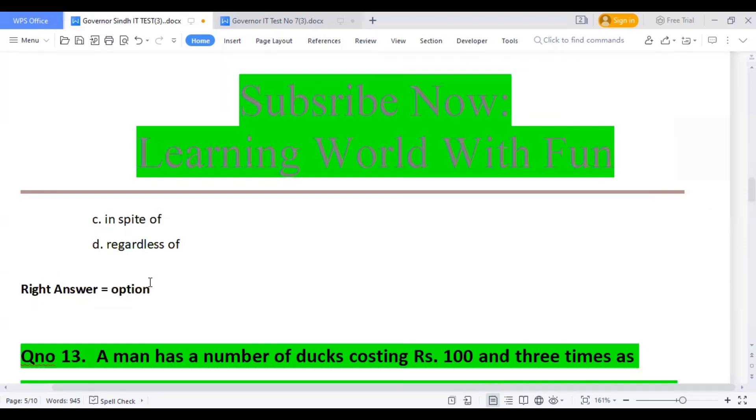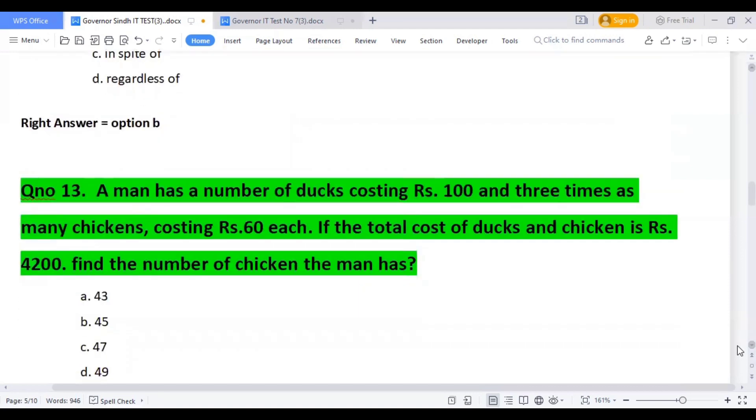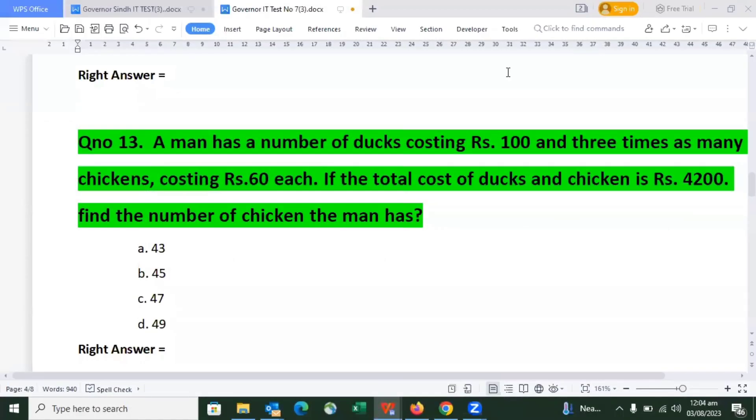We will move on to the next question, which is mathematics. Question number 13: A man has a number of hens costing Rs. 3 each and three times as many chickens costing Rs. 6 each. If the total cost of the hens and chickens is 4,200, find the number of chickens. The solution is already available, and option number 3 is the right answer.